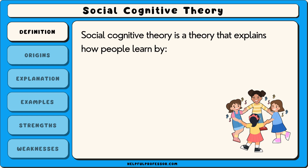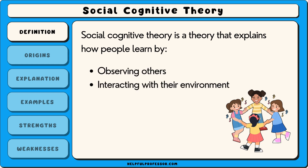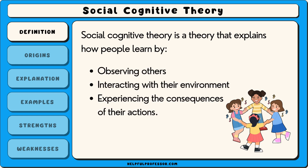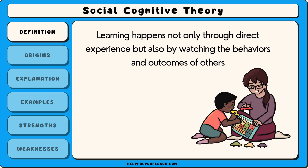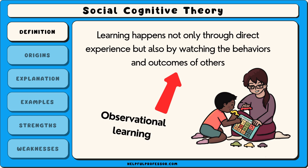Social cognitive theory is a theory that explains how people learn by observing others, interacting with their environment and experiencing the consequences of their actions. It suggests that learning happens not only through direct experience but also by watching the behaviours and outcomes of others, known as observational learning.